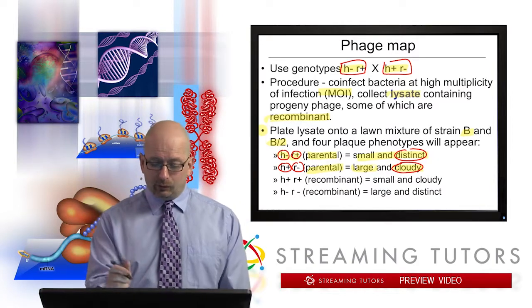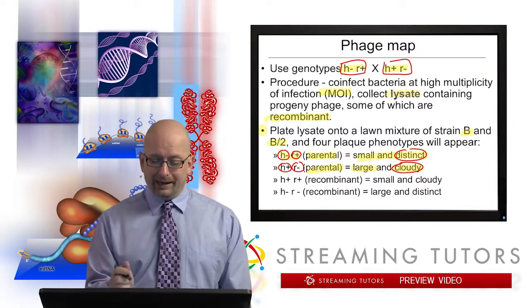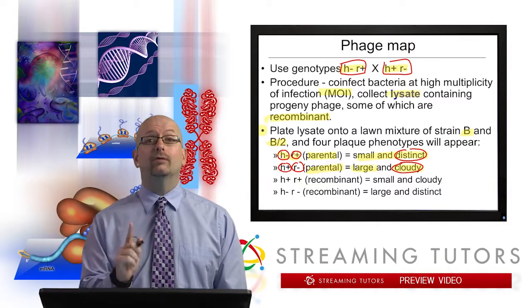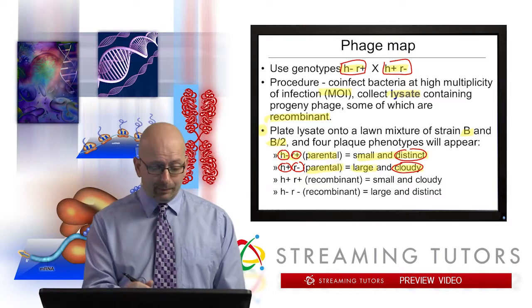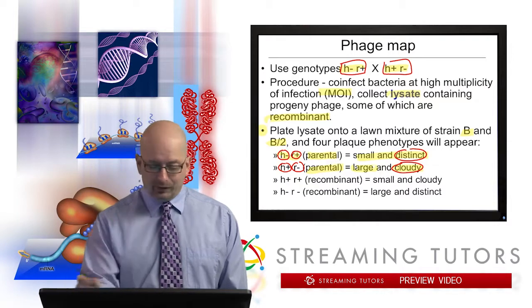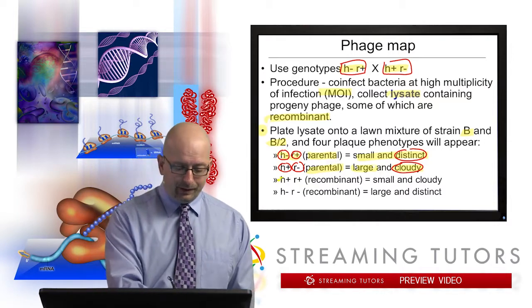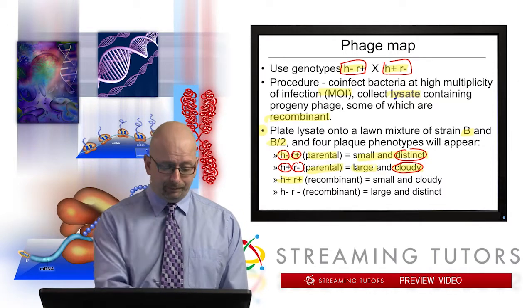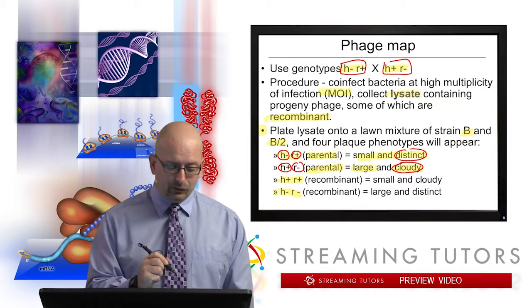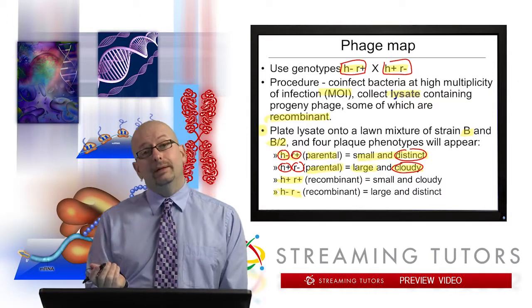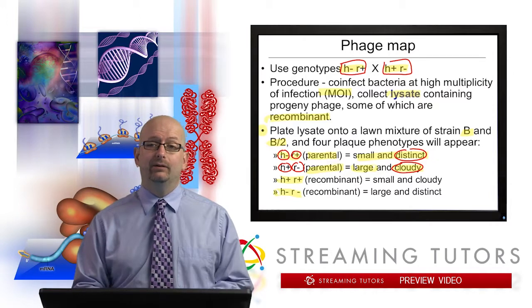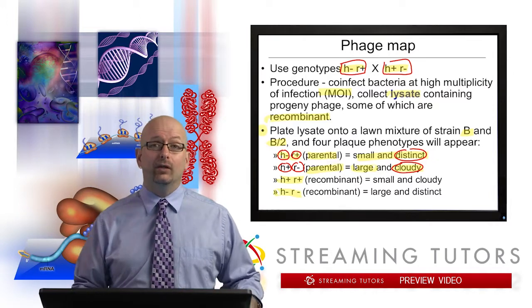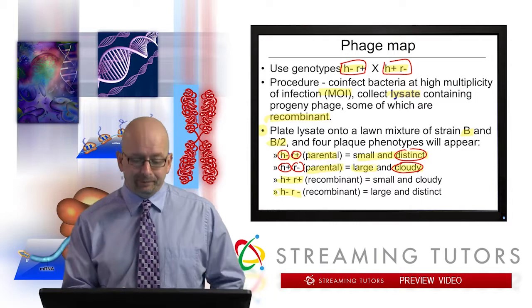So you can see a small and distinct plaque and a large and cloudy plaque — those are the parentals. The recombinants would be H-plus R-plus, which is fully wild type giving small and cloudy plaques, and H-minus R-minus giving large and distinct plaques. Generally speaking, when one recombinant is created, the other will be created as well.